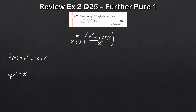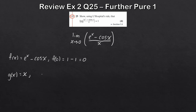Let f(x) = eˣ − cos x and g(x) = x. Checking: f(0) = e⁰ − cos(0) = 1 − 1 = 0 and g(0) = 0, so it's zero over zero — an indeterminate form. We can apply L'Hôpital's rule.